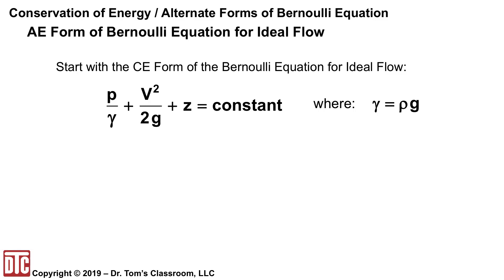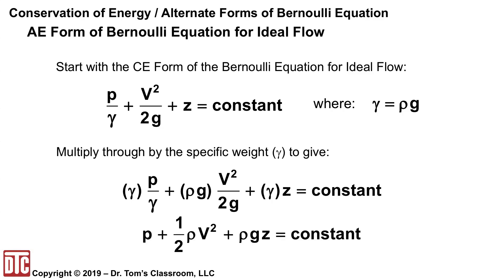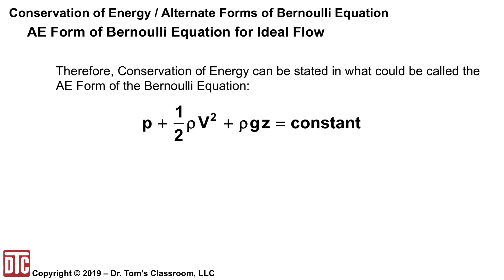To derive the AE form, we start back with the CE form again where gamma equals rho times g, then multiply through by gamma. Gamma in the first term and rho times g in the second term, and gamma in the third term. What we end up with is p plus one-half rho v squared plus rho gz equals a constant.